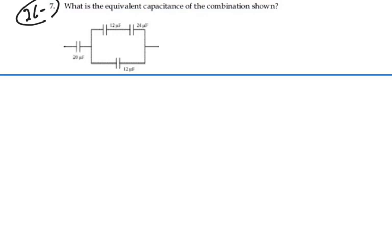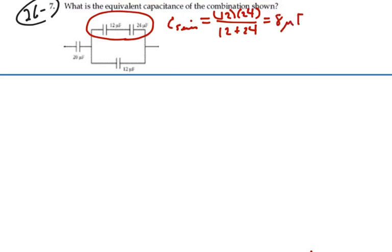In this circuit we can see that we have a series combination up here on top. So if we do that series combination product over the sum for two of them, we would have 12 times 24 over 12 plus 24, which would be 12 times 24 divided by 36, 8. So we have 8 microfarads.